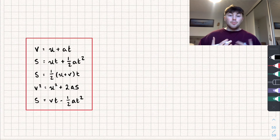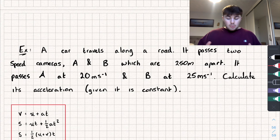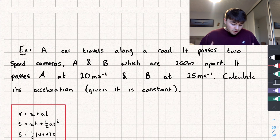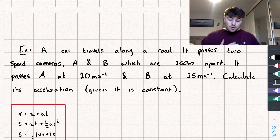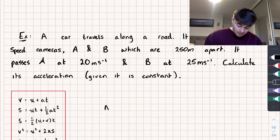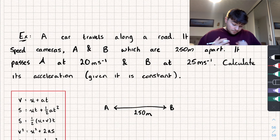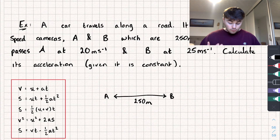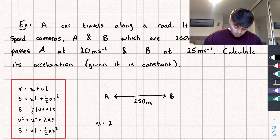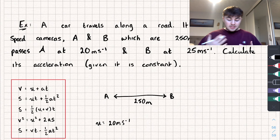Let's take a look at some exam questions. A car travels along a road and passes two speed cameras A and B, which are 250 meters apart. With these questions it's useful to draw a diagram, so we have speed camera A and speed camera B 250 meters apart. The car passes A at 20 meters per second — that's our initial velocity, u = 20 m/s — and it passes B at 25 meters per second, so v = 25 m/s.